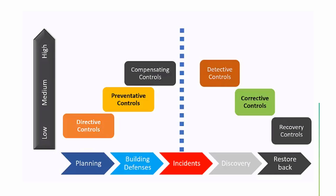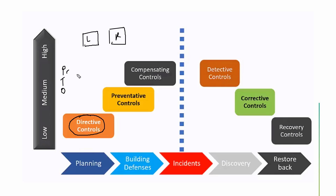To understand more in detail, here is a diagram showing the sequence of control types. The first is directive control — giving instructions and guidelines to everyone. For example, at a facility a sign says vaccinated users go left, non-vaccinated go right — that is a physical directive. When you log into a system and see a message saying 'this system is monitored by the SOC team,' that is a directive control — giving an instruction. Directive controls are used in planning and can handle low-level threats.